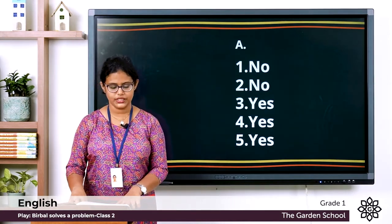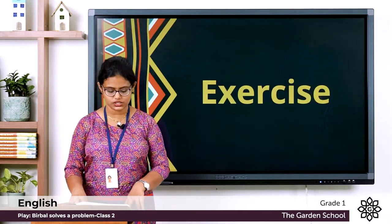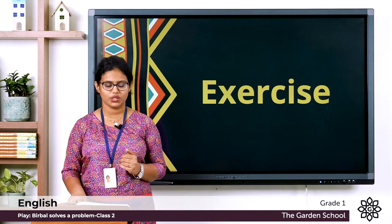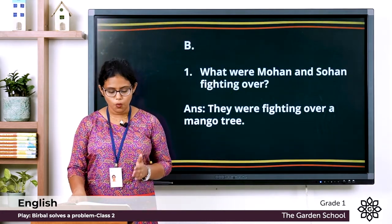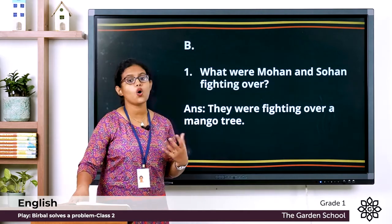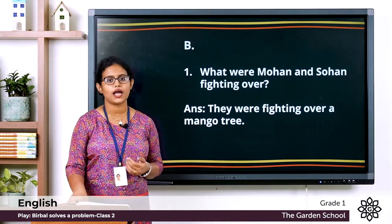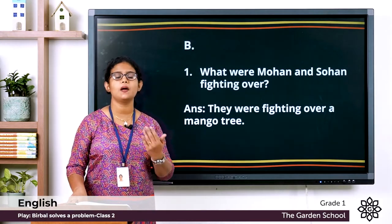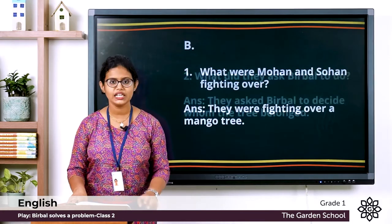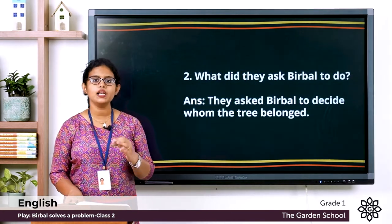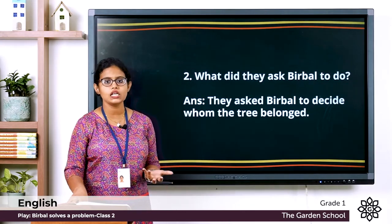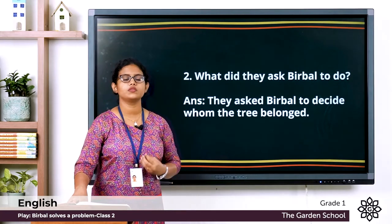Let's move to the next exercise, B — answer these questions. So you have four questions. Let's discuss the questions and answers and then you can write it down in your notebook. First one: What were Mohan and Sohen fighting over? They were fighting over a mango tree. Both of them claimed that this mango tree belongs to them. Second question: What did they ask Birbal to do? They asked Birbal to decide whom the tree belonged to — the mango tree.